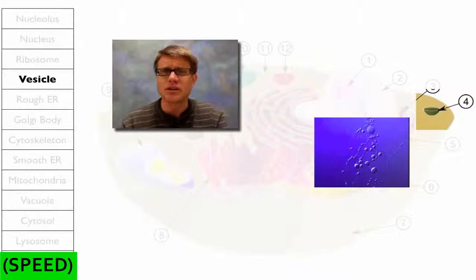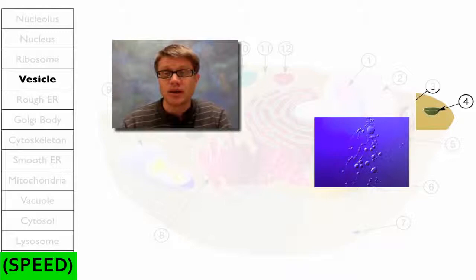Vesicle is a broad term. Vesicle basically means a membrane-bound container. And they're really, really small and sometimes they're really, really big. So a vacuole is the example of a vesicle. And they move material around. Depending on what they do, like a transport vesicle would move material around.